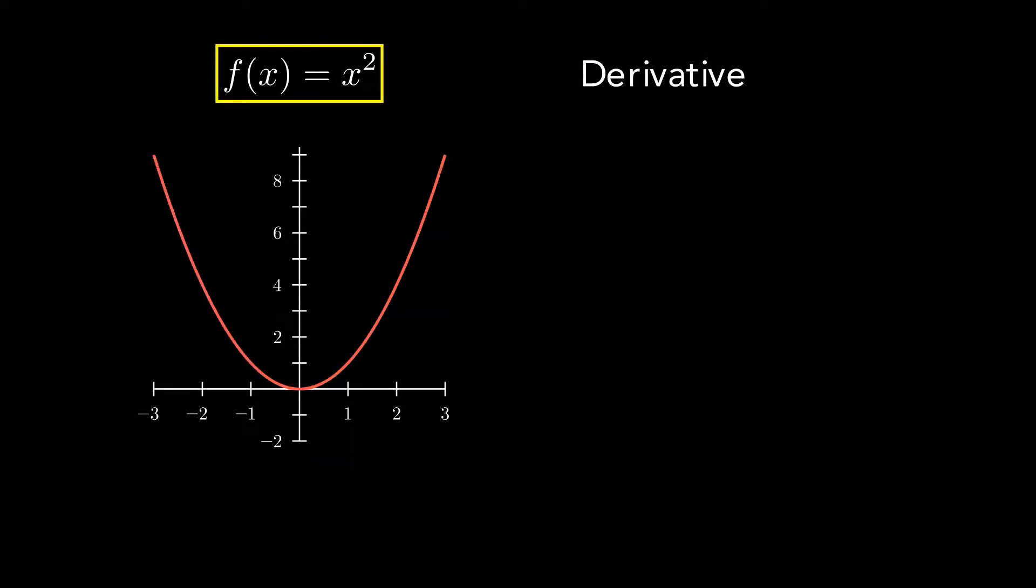Let's consider the function f(x) equals x squared. Given any point on the graph, we can draw the line that is tangent to the graph at that point. The derivative tells you the slope of that line.